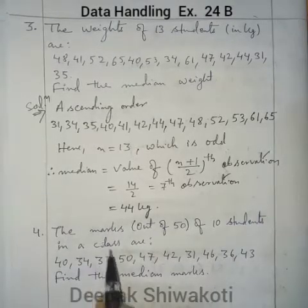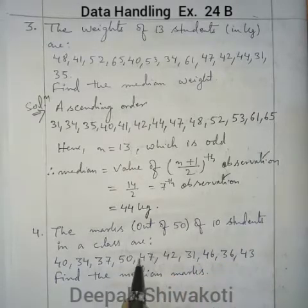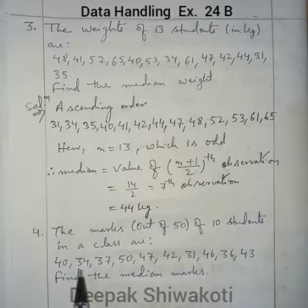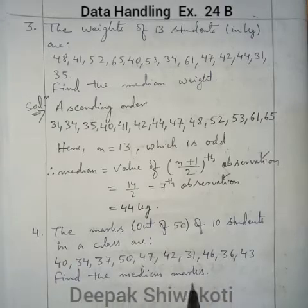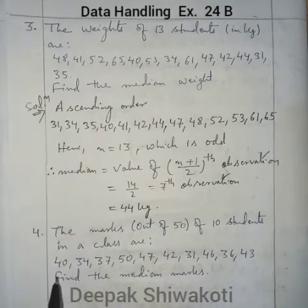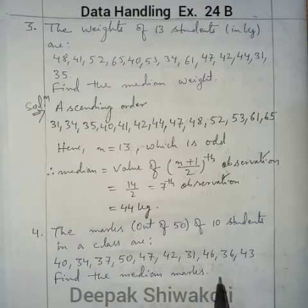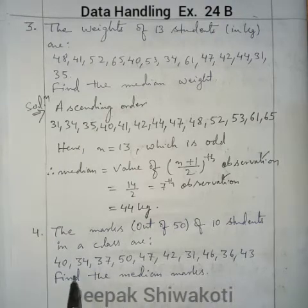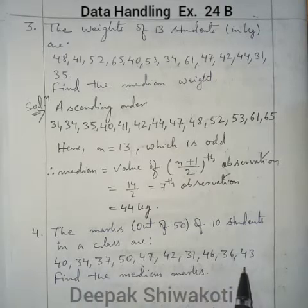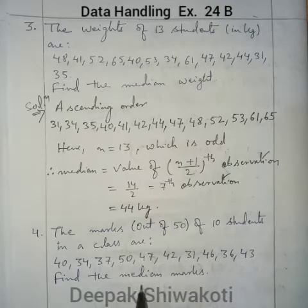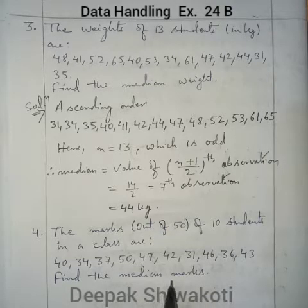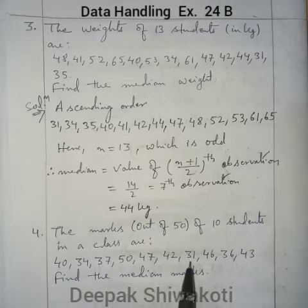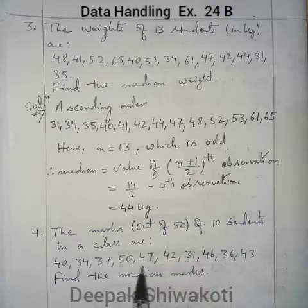Question number 4. The marks out of 50 of 10 students in a class are given: 40, 34, 37, and so on. Find the median marks. Like before, we will arrange in ascending order by finding the lowest and highest values. The lowest is 31 and the highest is 50, so we will arrange from 31 to 50.